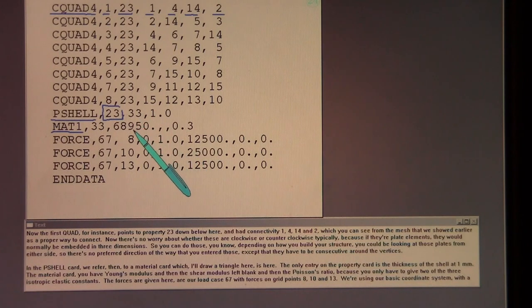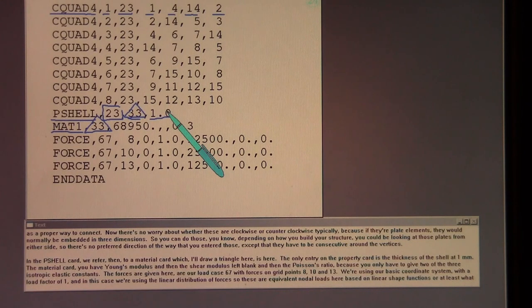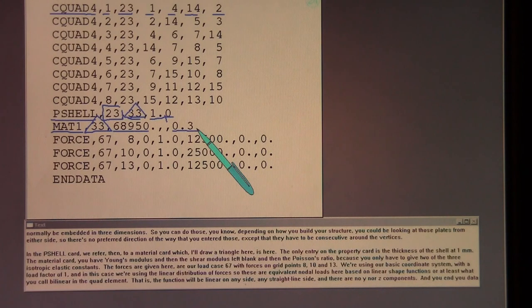All right, in the P-shell card, we refer then to a material card, which is here. The only entry on the property card is the thickness of the shell at one millimeter. In the material card, you have Young's modulus, and then the shear modulus left blank, and then the Poisson's ratio, because you only need to give two of the three isotropic elastic constants. The forces are given here, our load case 67, with forces on grid points 8, 10, and 13.